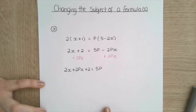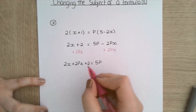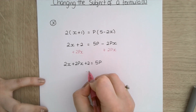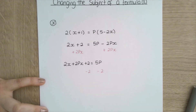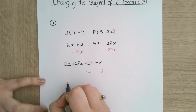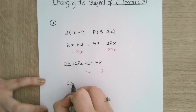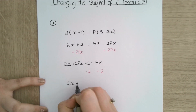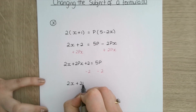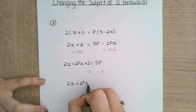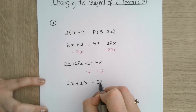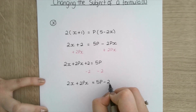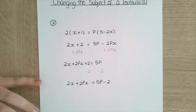I want to get rid of that random 2 before I go any further, so I'm going to subtract 2 from both sides. I get 2x plus 2px is equal to 5p minus 2.